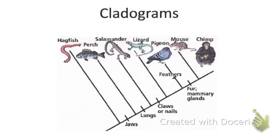We're going to look at cladograms today. In front of you, what you see is an example of a cladogram. There is a hagfish, a perch, a salamander, a lizard, a pigeon, a mouse, and a chimp. We also see jaws, lungs, claws or nails, feathers, fur, and mammary glands.